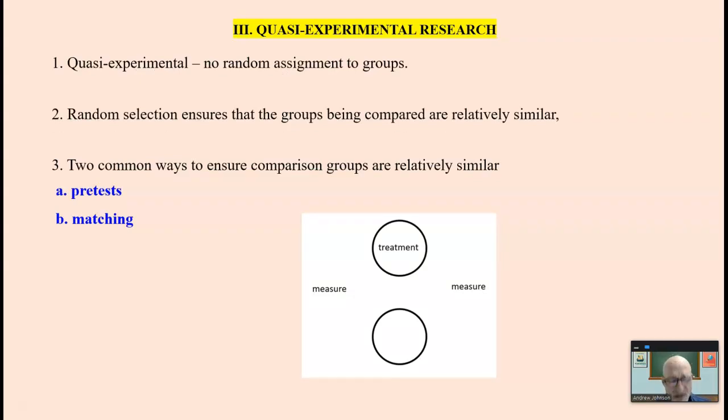The third one is quasi-experimental research. This is when there is no random assignment to groups. This is the closest we get to a true experiment. Random selection to groups ensures that the groups being compared are relatively similar. You're not comparing apples to oranges. And as stated earlier, in most schools and classrooms, random selection is not possible. However, there are two ways to ensure comparison groups are relatively similar: pre-test and matching. Again, this is a classic science experimental method. A measure, two groups. A measure, the groups are the same in every way except for the treatment. So you have to make sure these two groups are actually the same. That's one of the purposes of this.